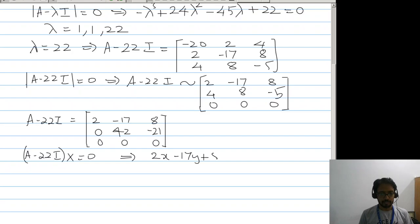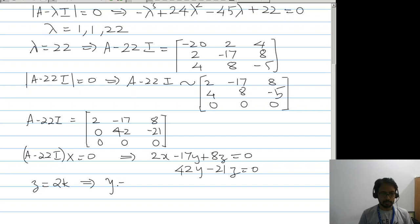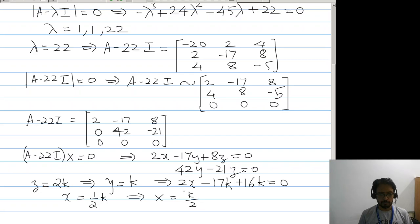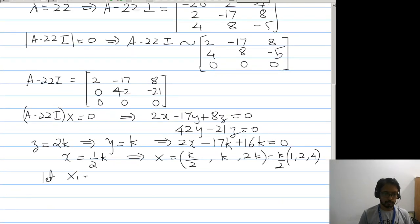This gives 2x minus 17y plus 8z equal to 0, and 42y minus 21z equal to 0. Taking z equal to 2k gives y equal to k, and then 2x minus 17k plus 16k equal to 0, so x equal to k over 2. Therefore the eigenvector x1 equals 1, 2, 4.